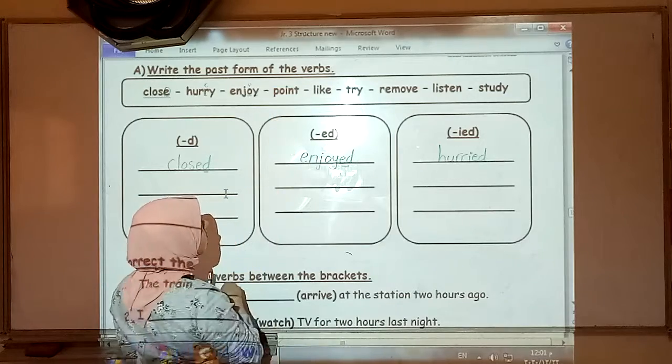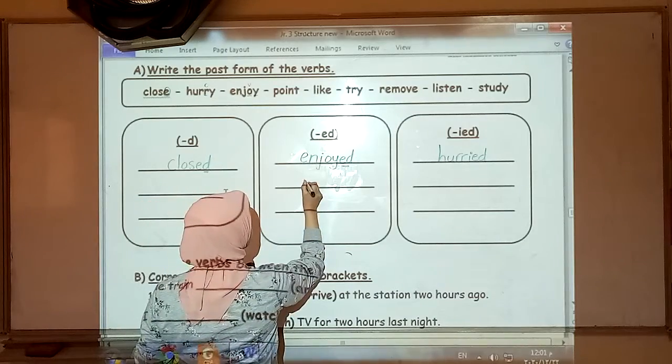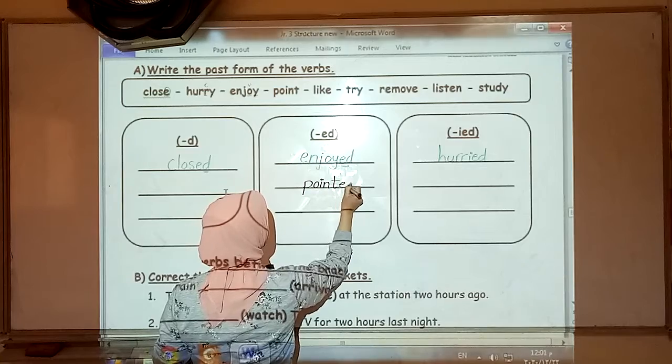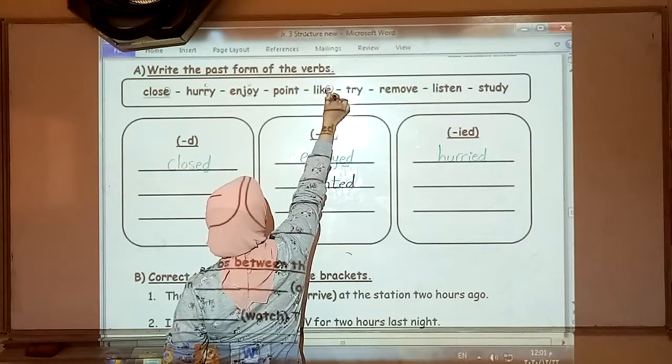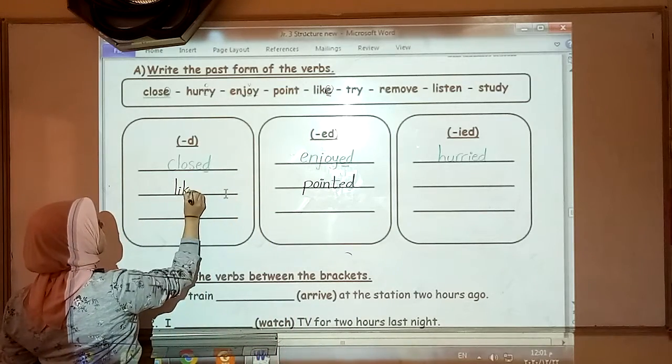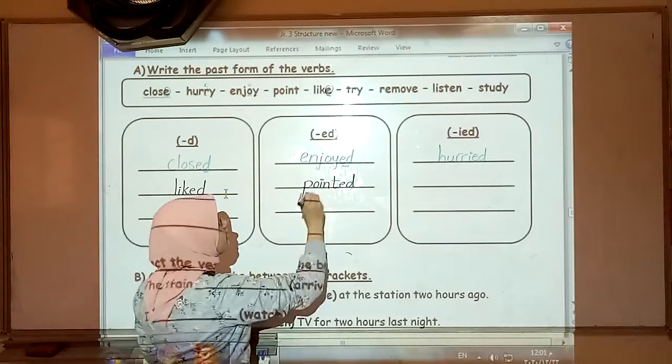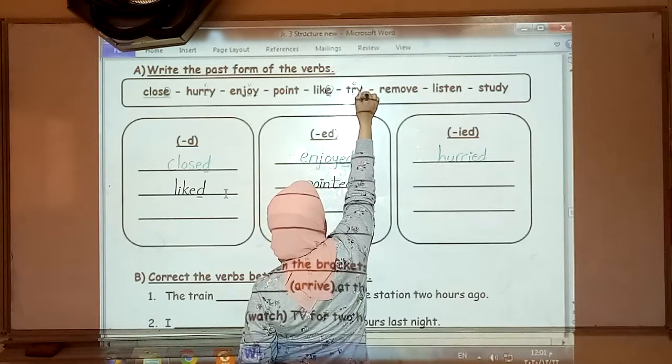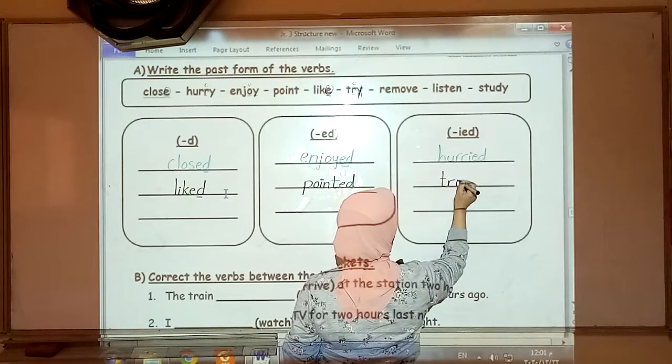Next, point. It's a normal verb. We add to it ED. Pointed. Like. It ends in E, so we are going to add to it D only.